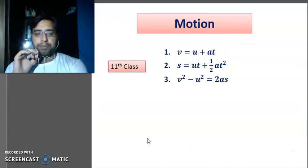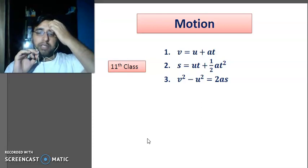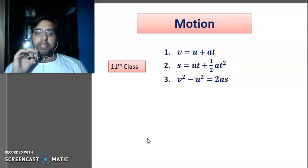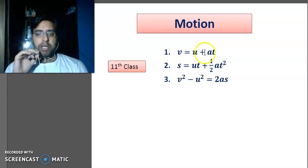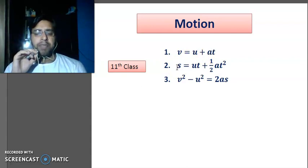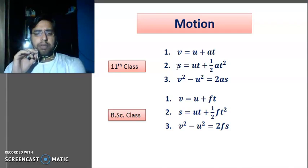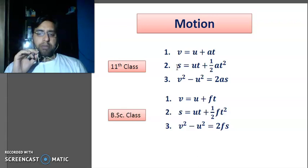There are three basic formulas from 11th class: v = u + at, s = ut + ½at², and v² - u² = 2as. Here, v is the final velocity, u is the initial velocity, a is the acceleration, t is time, and s is the distance covered by the particle. In dynamics, the notation for acceleration is changed to f in reference books, so we use the same formulas but with f representing acceleration.